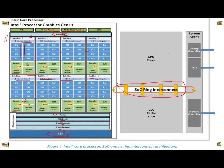The SOC ring interconnect consists of CPU core and LLC cache slices. It is connected to the system agent. The system agent consists of display controller, PCIe, and memory controller. This is the architecture of Intel i11 processor.